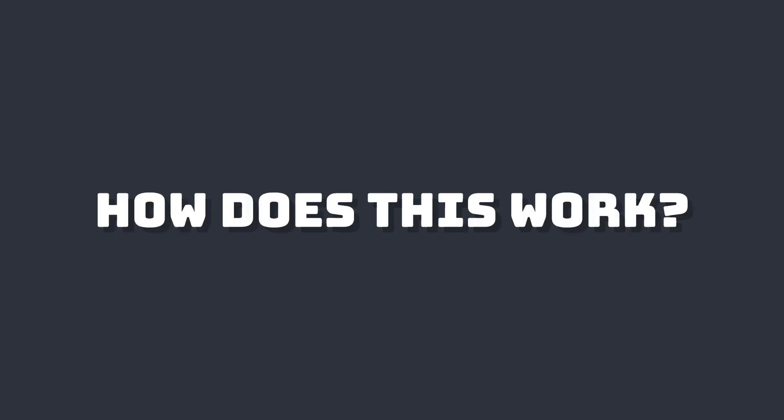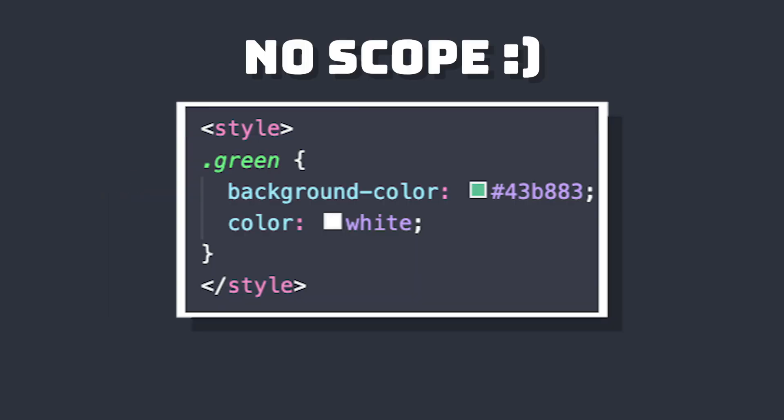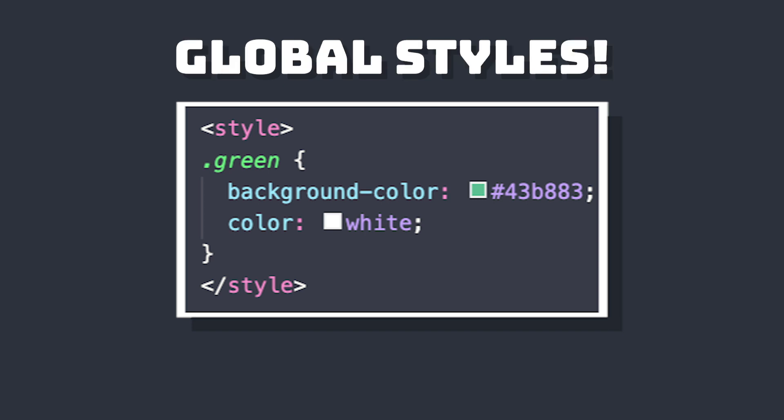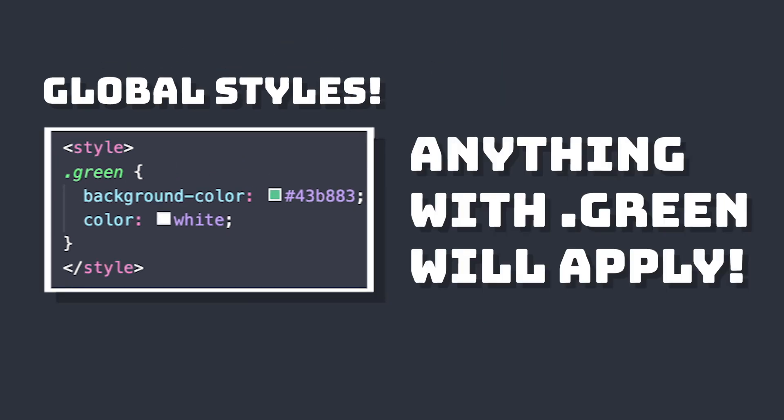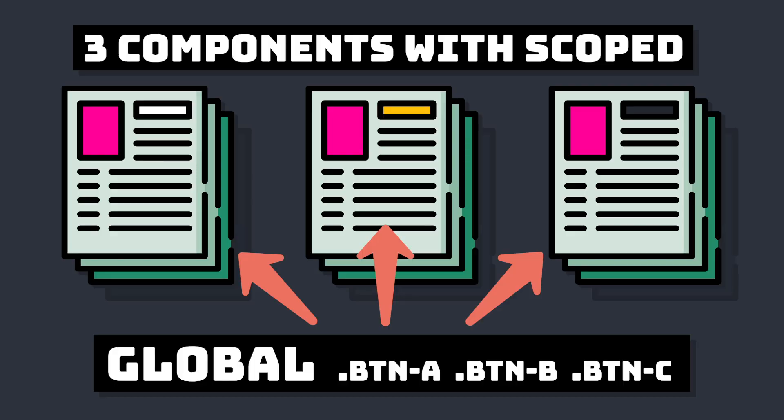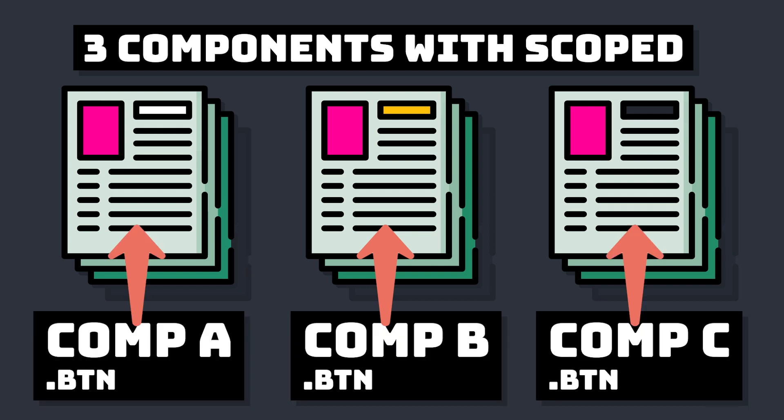First, let's understand how style scoped works. If we don't add scoped to our style tag, by default all of our styles will be global, meaning that any element that matches our CSS selector will have these styles applied. For example, if we have multiple buttons on different components and we don't want complex CSS naming, we can just use scoped styles to have different button styles for each component.